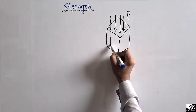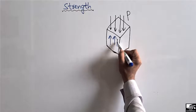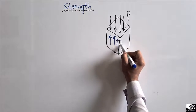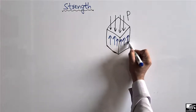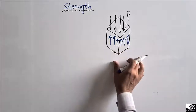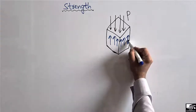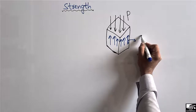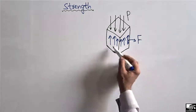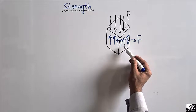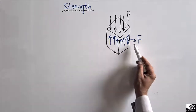Due to this load, there will be some resistance created inside the material in order to resist the upcoming load. This internal resistance is created in the material to take this load, and it is represented by F. The higher the internal resistance of the material, the higher the strength of the material.